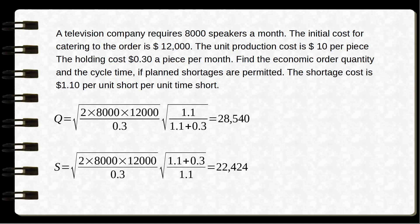The unit cost for a speaker is $10 per piece. The holding cost is $0.30 per piece per month. That is, if we held one piece of speaker per month, the holding cost would be $0.30. Find the economic order quantity and the cycle time if planned shortages are permitted. The shortage cost is $1.10 per unit short per unit time short.